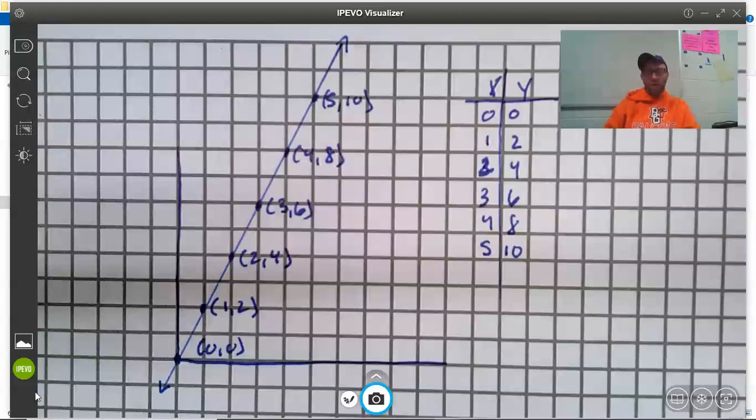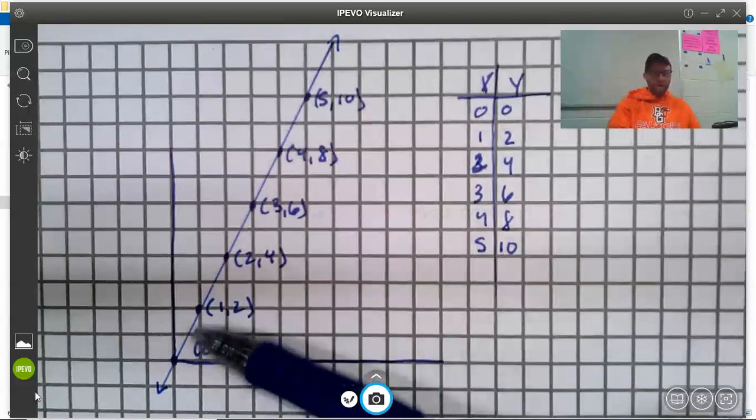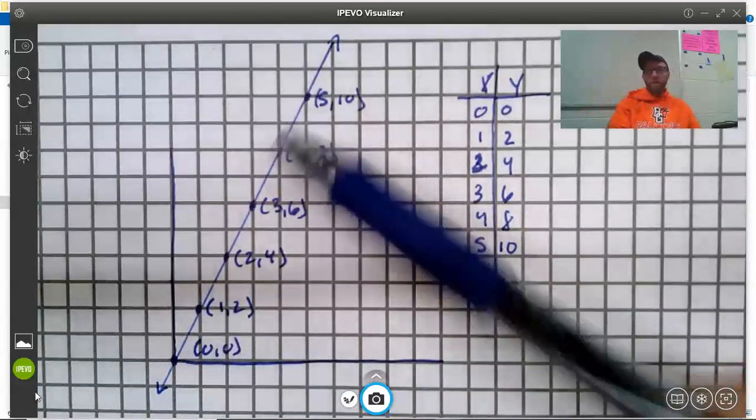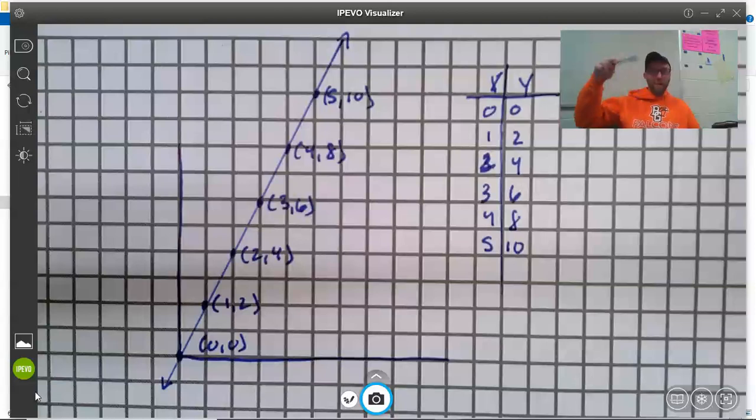As we travel from one point to another, how does our x-coordinate change? That's our left-right position. How does our y-coordinate change? That's our up-down position. So as I'm moving from one point to another, how am I moving left-right? How am I moving up-down?